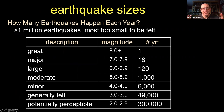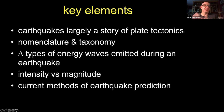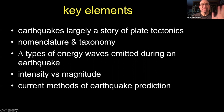We have different ways of measuring earthquakes. The oldest earthquake-measuring devices were from ancient China, and they operated on the same conceptual principles as what we still use today. Key aspects of earthquake science: first and foremost, earthquakes are primarily a story of plate tectonics. We'll review plate tectonics briefly, then talk about some nomenclature, different types of seismic waves, intensity versus magnitude, and current prediction methods.